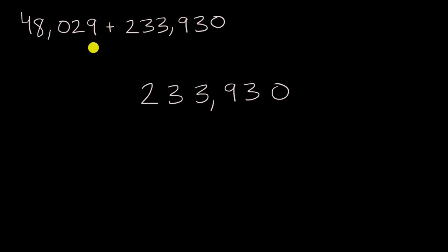I'm going to write the ones place in the same column as the ones place on the top number. This is the ten thousands place, so 48,029. Nine ones, zero ones, two tens, three tens, and so on.